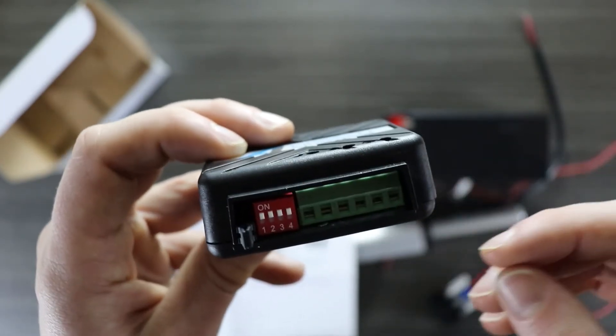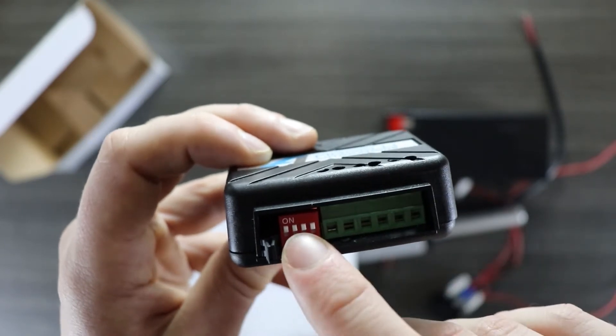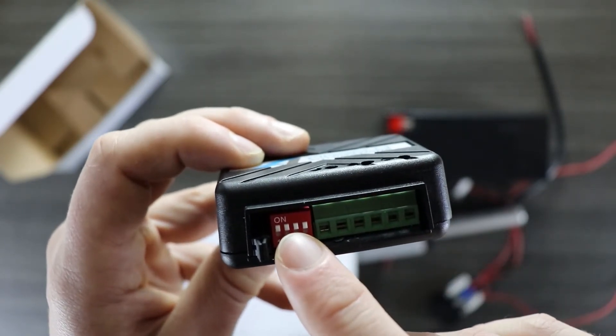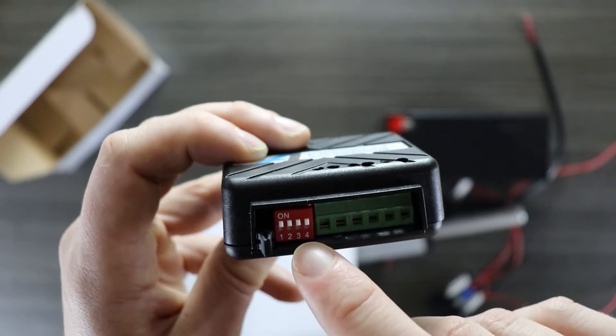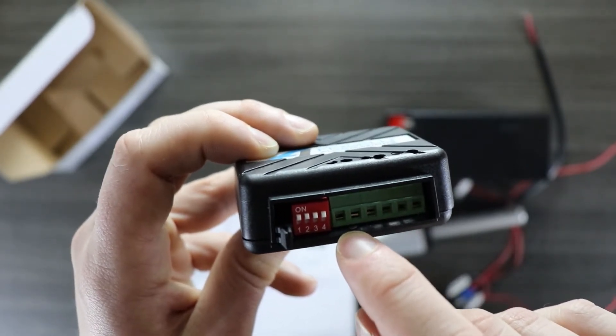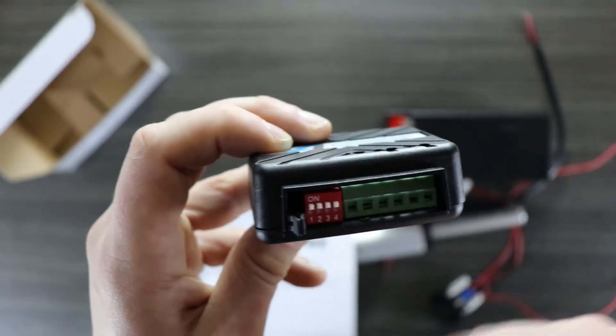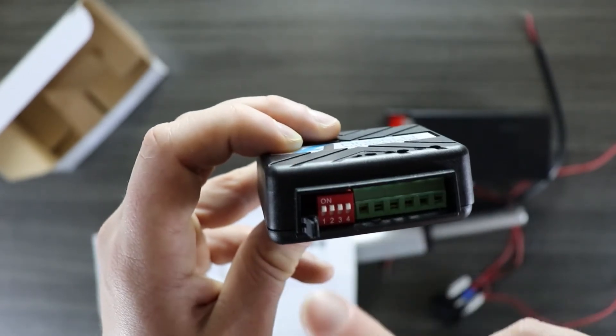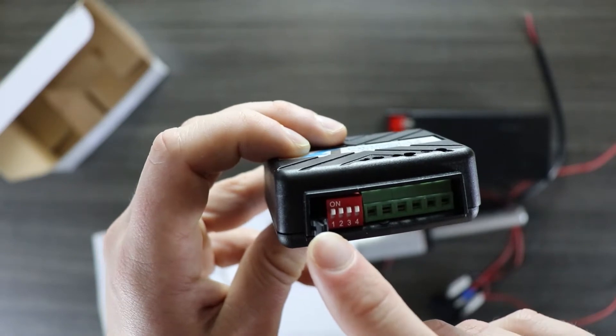Now you can set the speed either using these four dip switches to program the speed, or instead of using the dip switches you can use the last two pins here to set the speed using an external voltage. If you do this you'll need to program this control board using the two jumper pins.